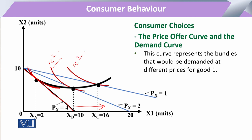The bundles A, B, and C represent all the optimal bundles with respect to the change in price. When we join all these points, we come up with a curve called the price consumption curve or the price offer curve.